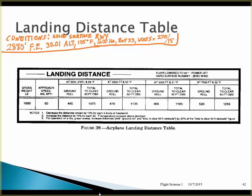We'll start by finding our pressure altitude. We subtract our altimeter setting from 29.92: that yields negative 0.09. We multiply that times 1,000 to get a lapse of negative 90 feet. So our pressure altitude is 90 feet less than our field elevation — 2,790 feet is our pressure altitude.